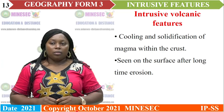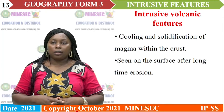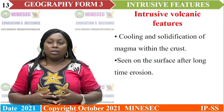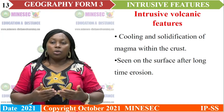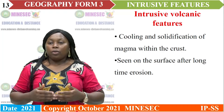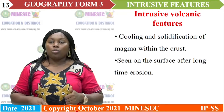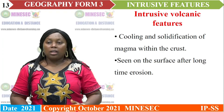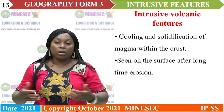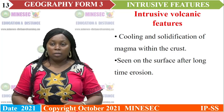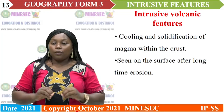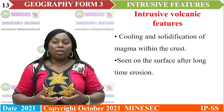We move into our lesson proper: intrusive volcanic features. What are intrusive volcanic features? These are features formed from the cooling and solidification of magma within the crust. They are seen on the surface after a long time of erosion — these features can only appear on the earth's surface after erosion has taken place. Intrusive features are formed when magma is injected into the crust, then cools and solidifies.